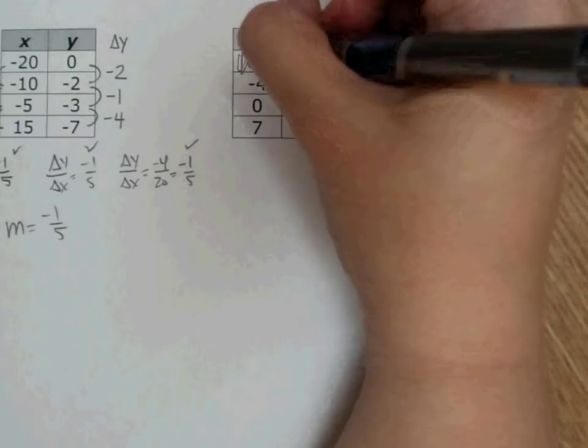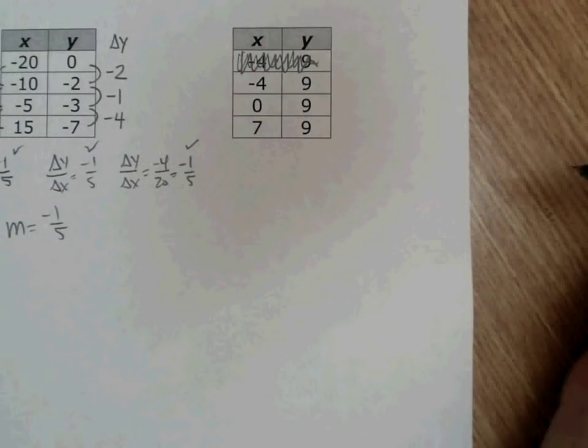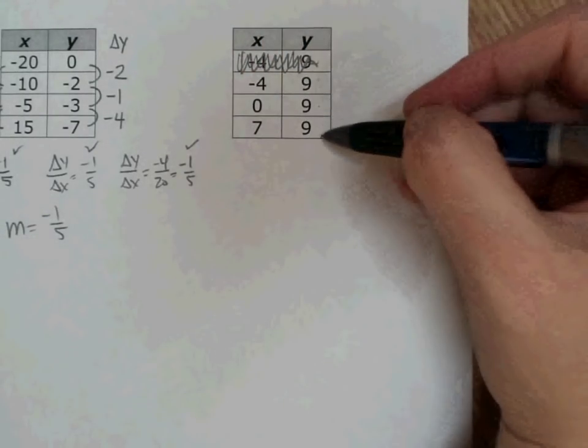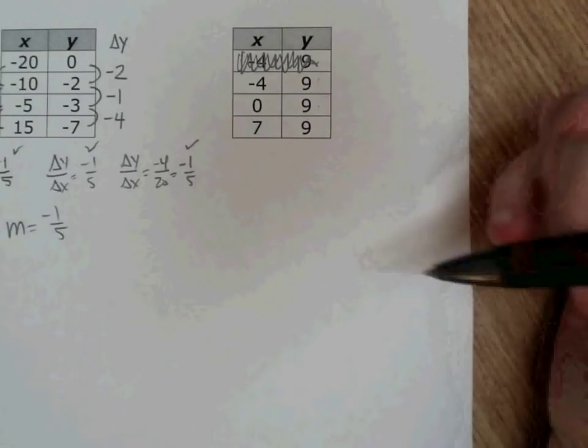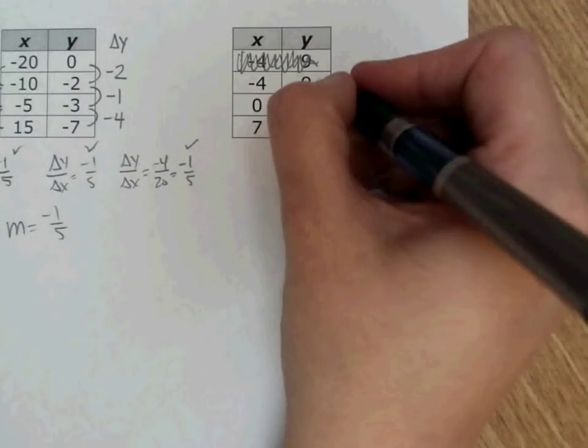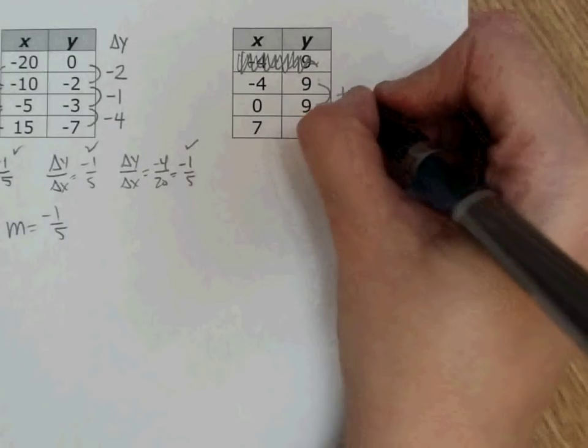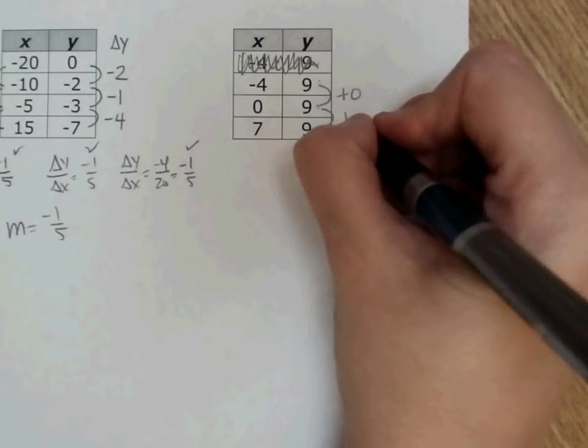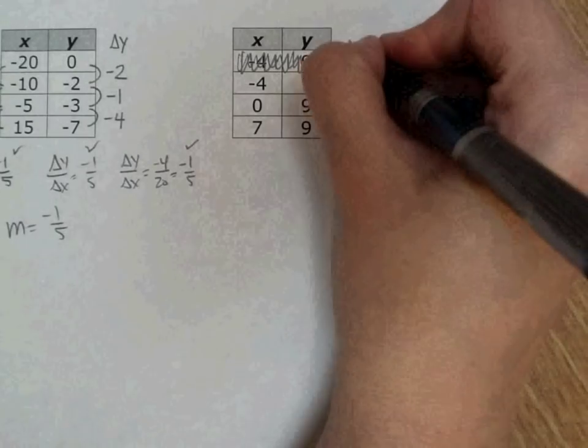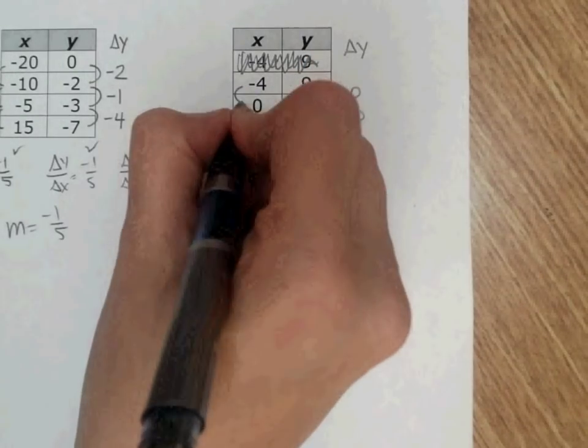Now this last one kind of looks weird. It looks weird because I'm noticing that all of my y's are the same value, so I'm kind of wondering how that's going to work. How do I get from 9 to 9? What do I add? I add nothing. To get from 9 to 9, I add nothing. So my delta y over here is nothing.